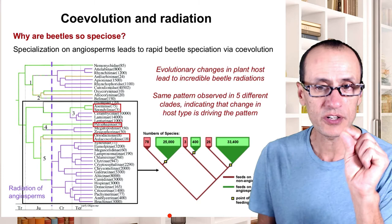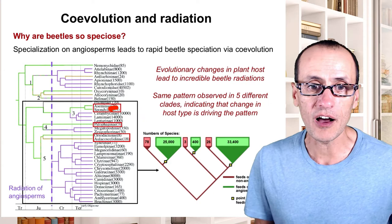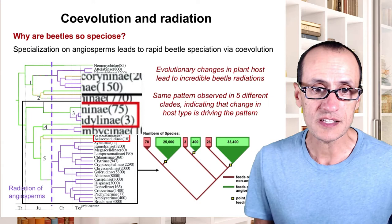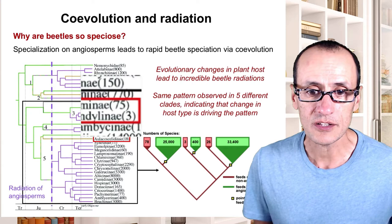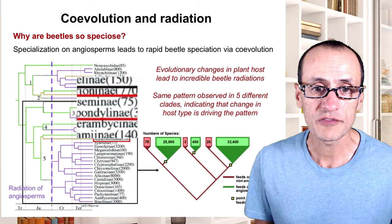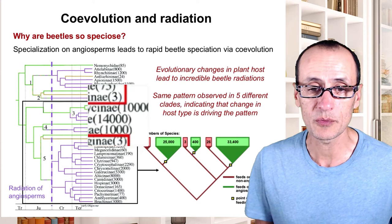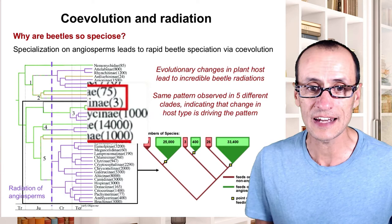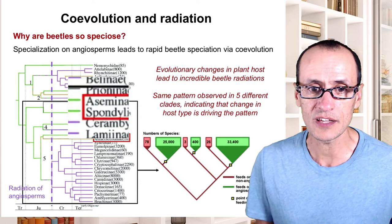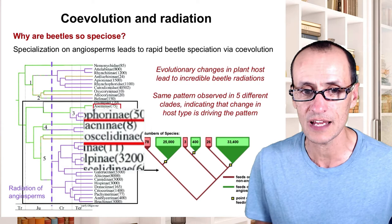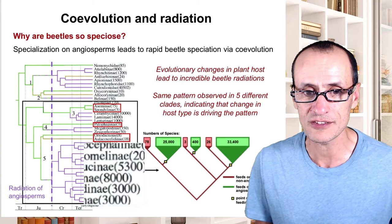When Farrell compared sister groups within the beetles — those feeding on non-angiosperms versus those feeding on angiosperms — the pattern is even more striking. The number of genera found within angiosperm-feeding groups is dramatically higher. Groups that were feeding on angiosperms were significantly more speciose than those feeding on non-angiosperms — eight and eighteen species in non-angiosperm groups compared to 300, 2,000, even 8,000 species in angiosperm-feeding groups.